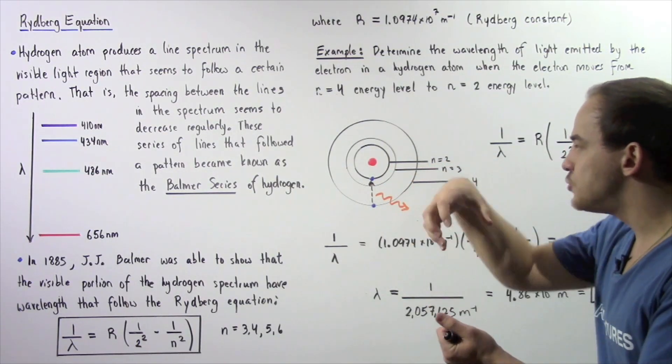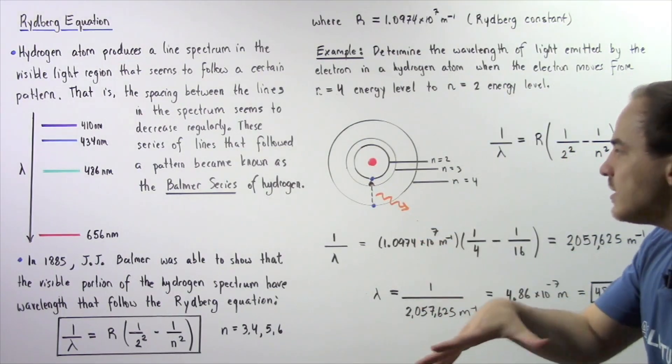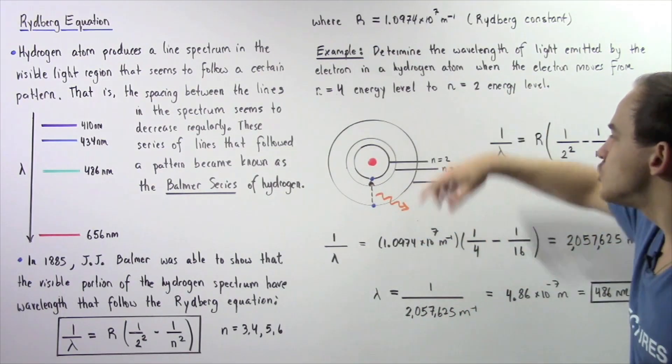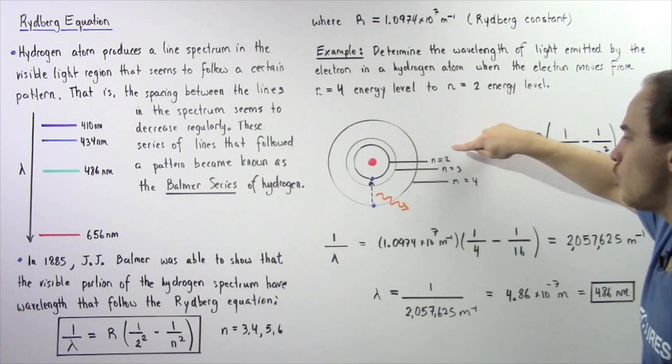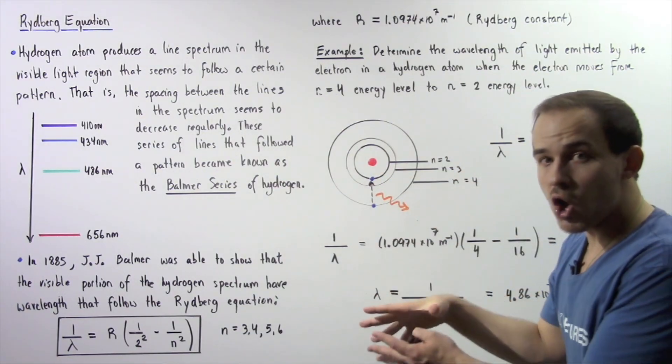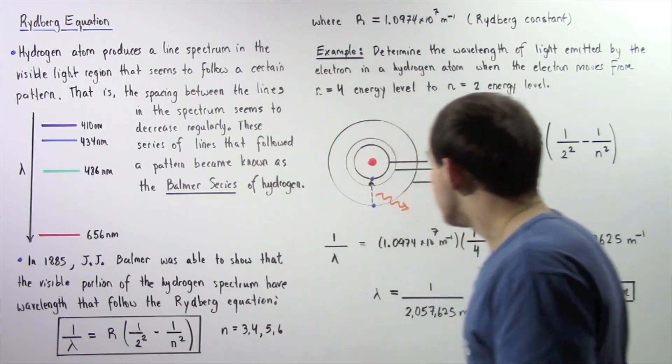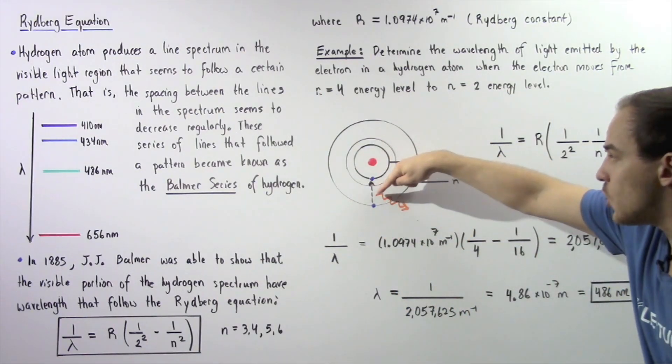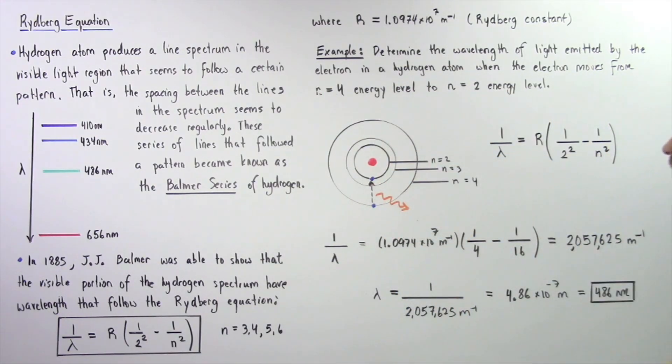So our electron basically jumps from a higher level, n equals 4, to a lower level, n equals 2. And when the electron moves from a higher to a lower, a photon is released. So the photon, the light, is shown by the following squiggly line.